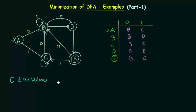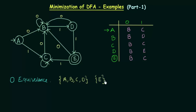In order to write down the zero equivalence, it is very simple — you have to write the non-final states together as one set and the final states as another set. Here my non-final states are A, B, C, and D, so I will make this one set {A, B, C, D}. And my final state is only E. So this is the zero equivalence: non-final states as one set and final states as another set.